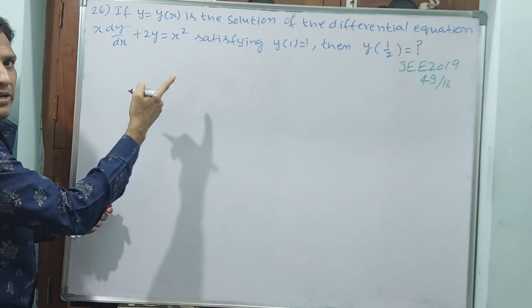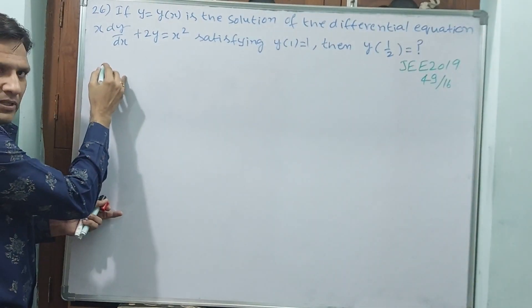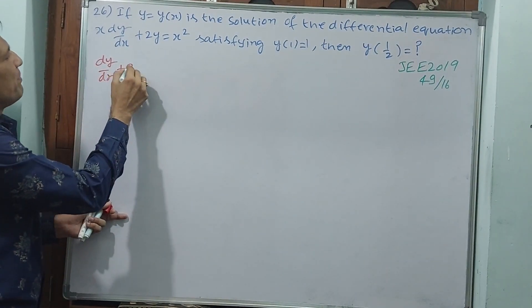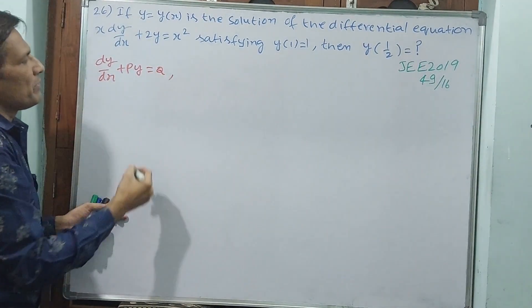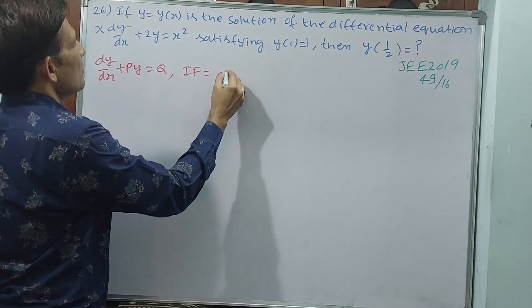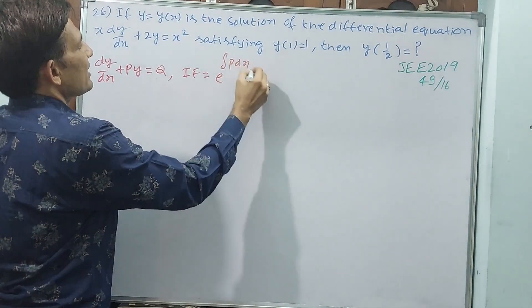You divide it by y. So write the formula. Dy by dx plus py equals q should be there. Then integrating factor is equal to e power integral pdx.